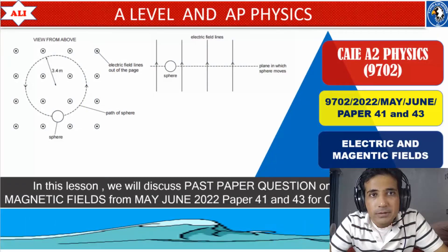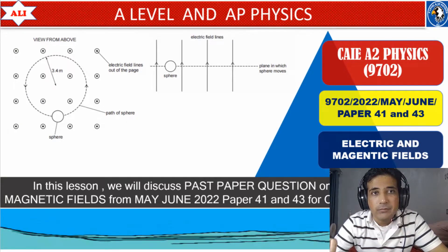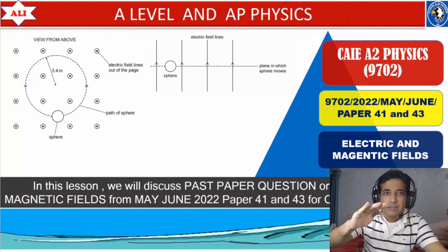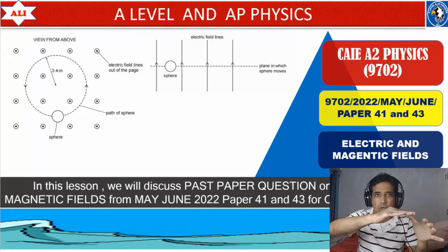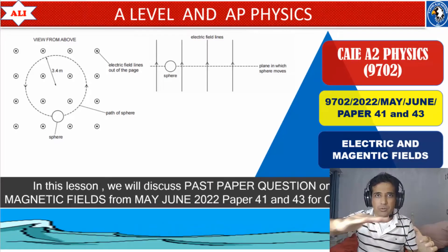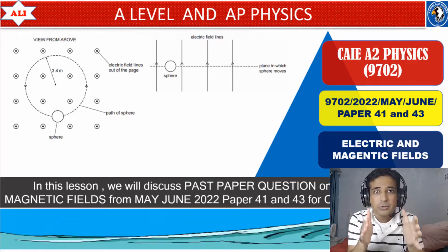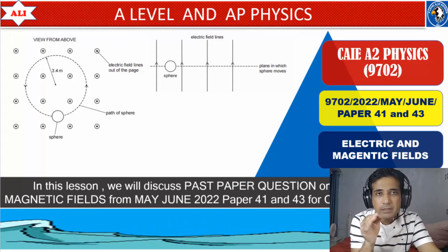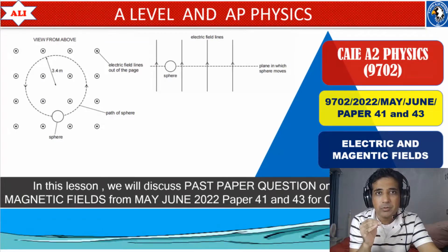Welcome to A-level and AP Physics. In today's lesson we will discuss a past paper question on electric field and magnetic field from Cambridge 2022 Paper 4 Variant 1. In this question we will study the motion of a particle in a region where we have both electric field and magnetic field. This concept is very important in physics and we will study it by solving past paper questions.